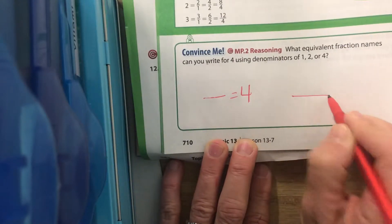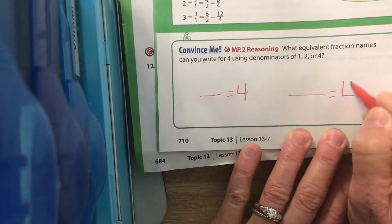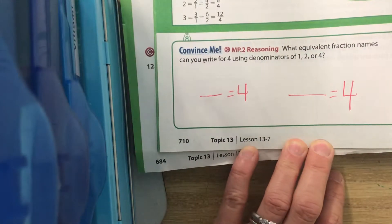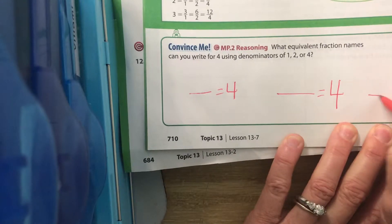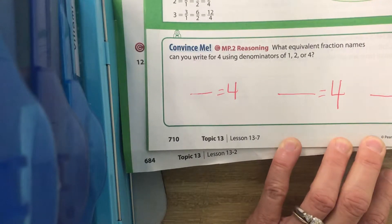We're down on page 710. Convince me. What equivalent fraction names can you write for 4 using denominators of 1, 2, and 4?